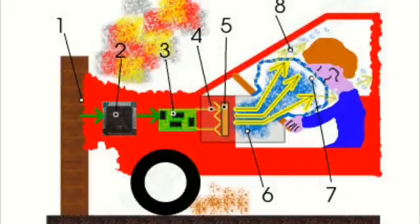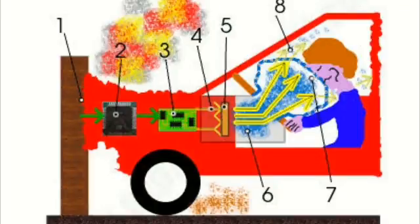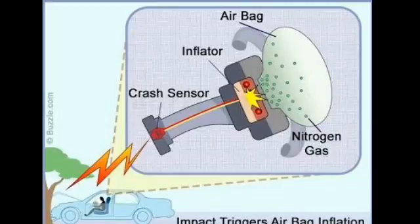The bag literally bursts from its storage site at 200 miles per hour — faster than the blink of an eye. The gas quickly dissipates, deflating the bag. Even though the whole process happens in 1/25th of a second, the additional time is enough to help prevent injury. The powdery substance released from the airbag is regular talcum powder, used by manufacturers to keep the bags pliable and lubricated.